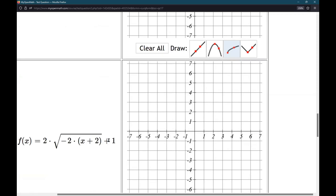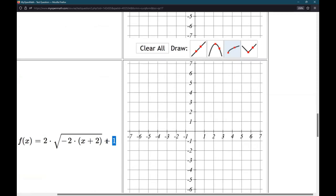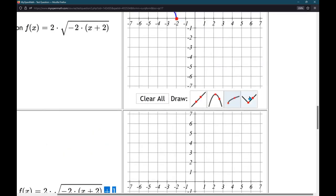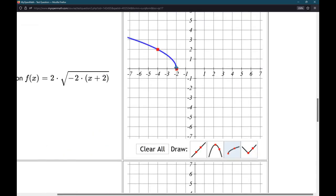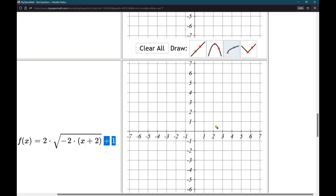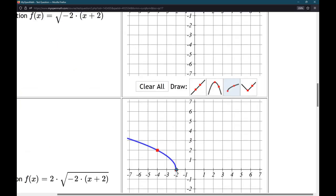All right. Last, the plus 1 is happening outside the square root. So, it's vertical. And it's a shift up 1. So, we're going to take these two points and move them up 1. So, this y-coordinate will become positive 1. This y-coordinate will become positive 3.